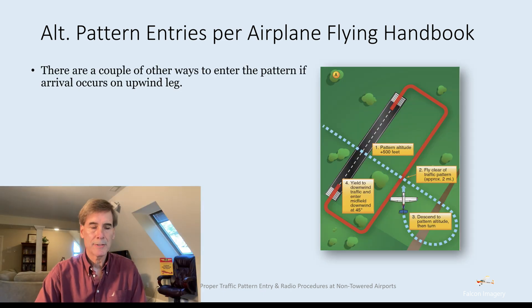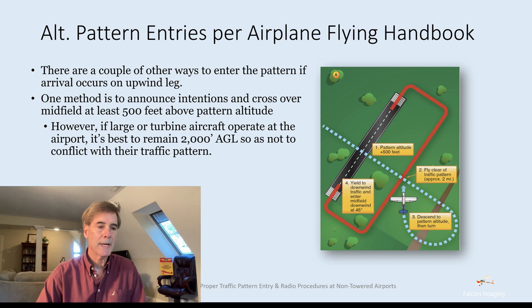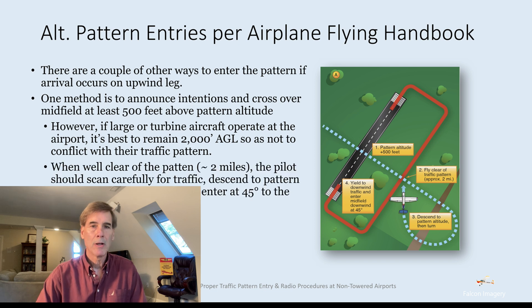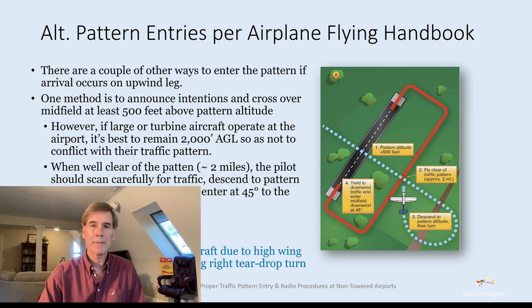There are a couple of other ways to enter the traffic pattern if arrival occurs on the upwind leg side. One method is to announce your intentions and cross over midfield at least 500 feet above pattern altitude — or 2,000 feet AGL if large or turbine aircraft operate at the airport. When well clear of the pattern, roughly two miles out, scan carefully for traffic and descend to pattern altitude via a teardrop turn to enter a 45-degree entry into the downwind leg at midfield. However, this is not ideal for low-wing aircraft because the high wing blocks vision for traffic coming in on the 45-degree angle during the teardrop turn.